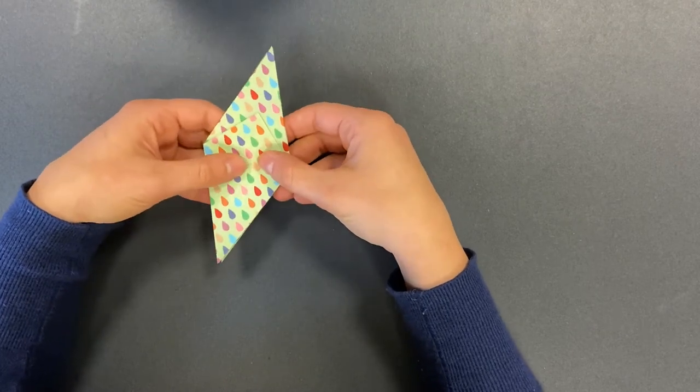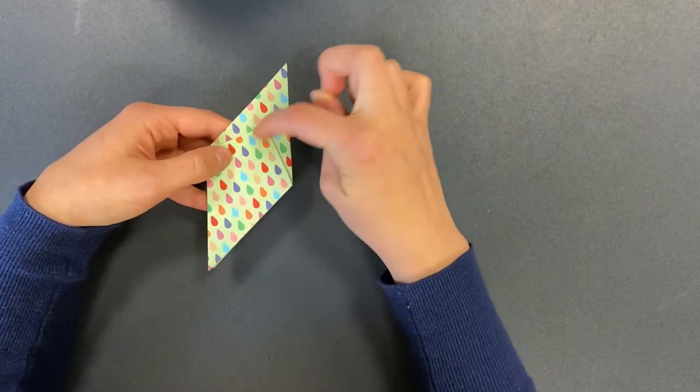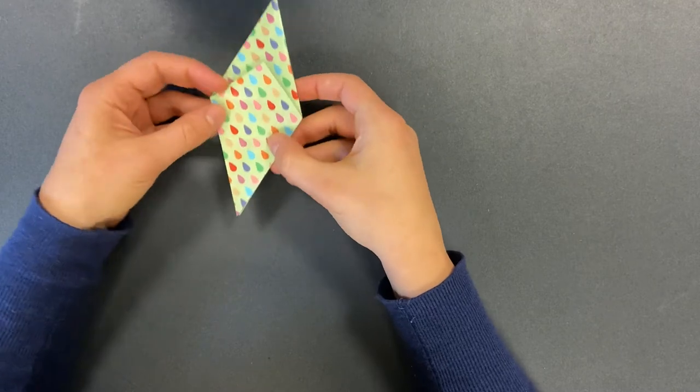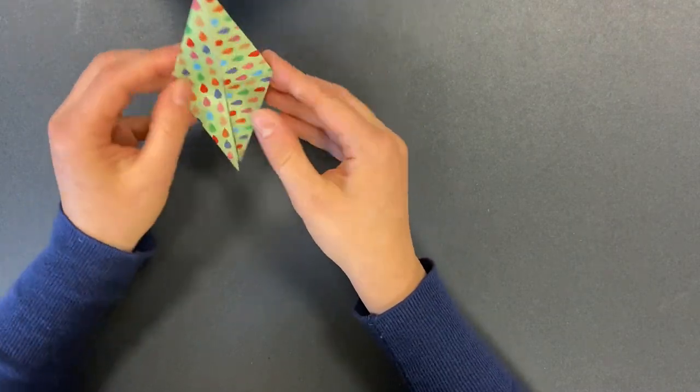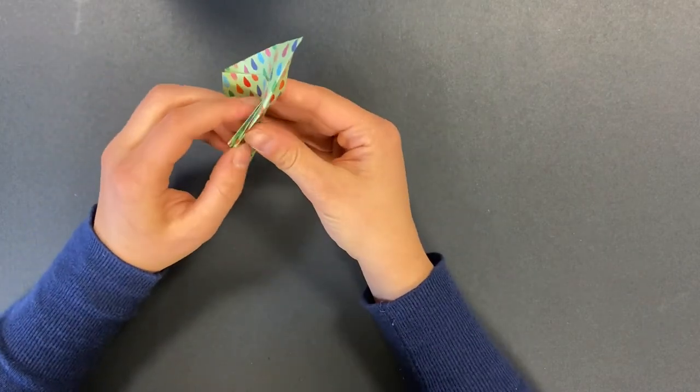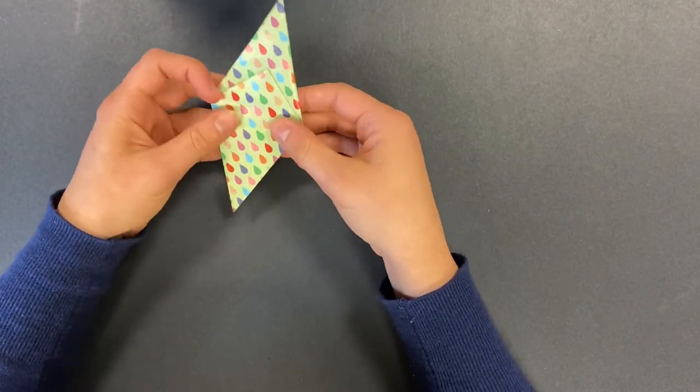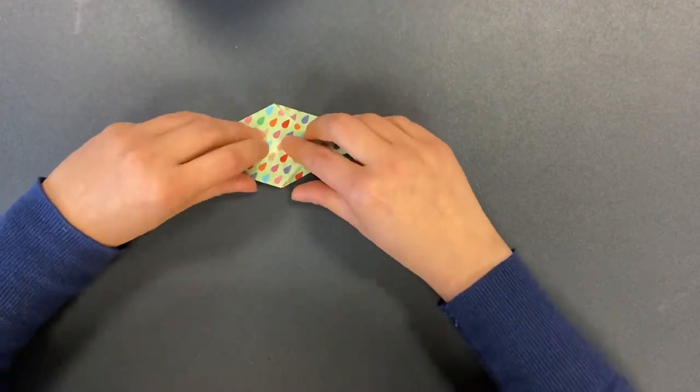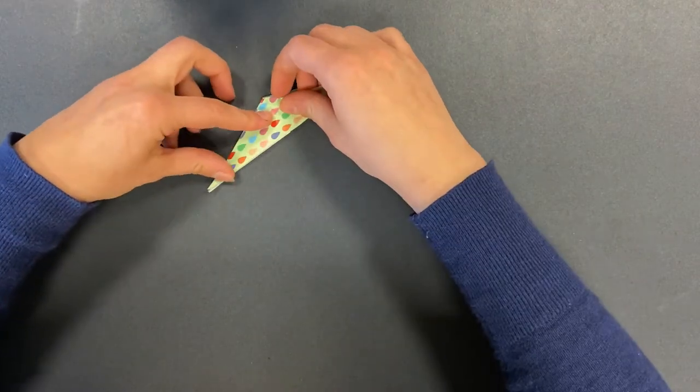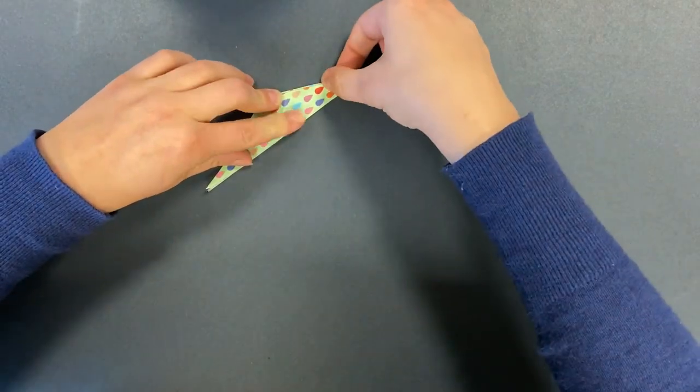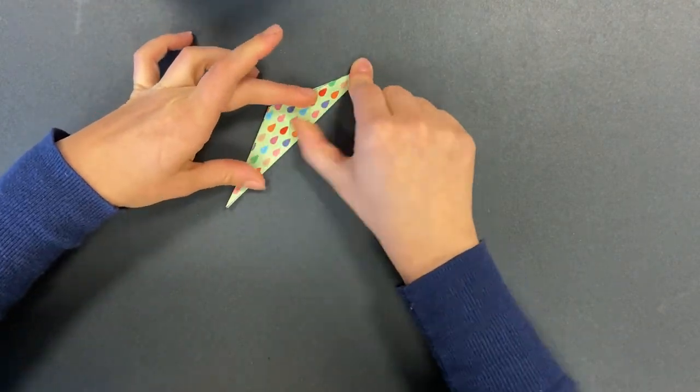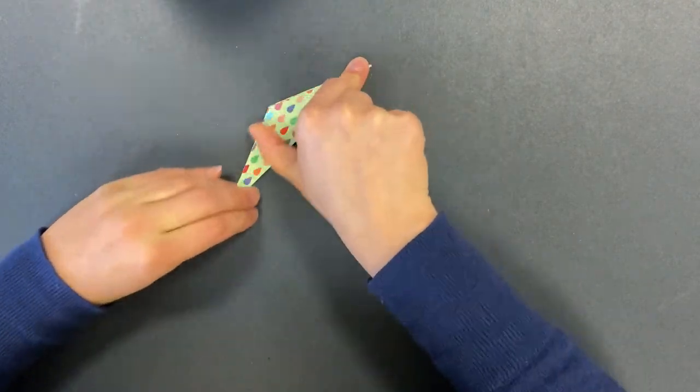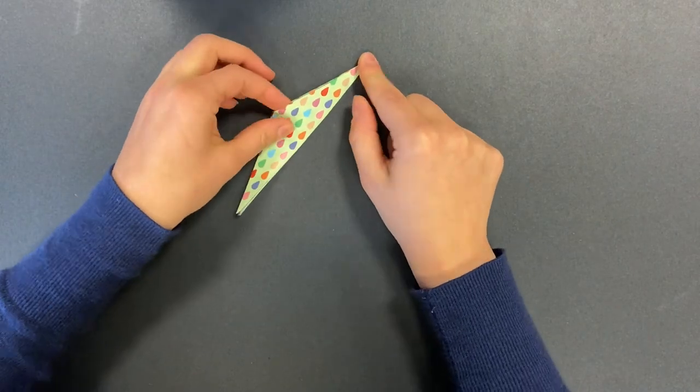Now you're going to fold the paper in half along the center line. You want to make sure that the side that has the opening is going to face out. So not like this, but rather the open edges we want out. Okay. So you're going to fold it in half.